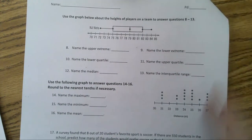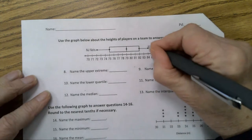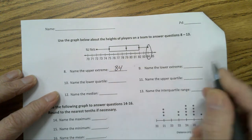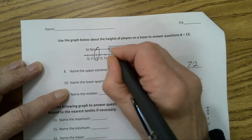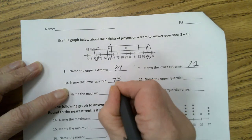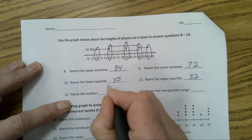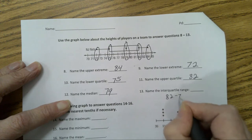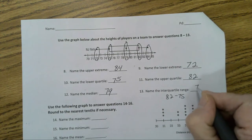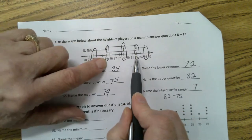Here we have a box plot. It says use the graph below about the heights of players on a team to answer questions 8 to 13. The upper extreme, 84, the lower extreme, 72, the lower quartile, 75, the upper quartile, 82, the median, 79, and the interquartile range. That will be 82 minus 75, and that will give you the answer of 7. That's the distance between the lower quartile and the upper quartile, 75 and 82.